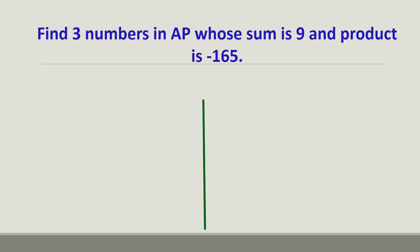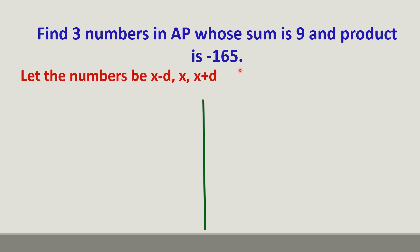Now let us try to solve a question using this formula. Find 3 numbers in AP whose sum is 9 and product is −165. We have to find 3 numbers in arithmetic progression whose sum is 9 and product is −165. So let the numbers be x − d, x, and x + d.